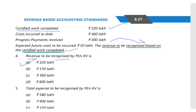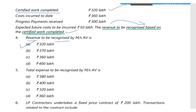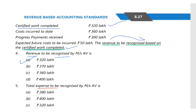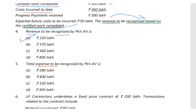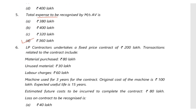Total expense to be recognized: the cost incurred to date is 360 lakh, so it is option D. Next question.